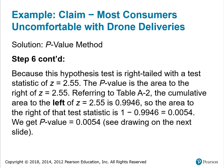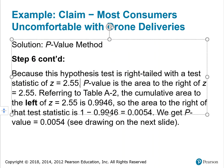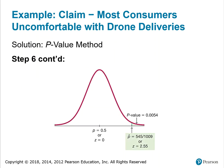Because this hypothesis test is right-tailed with a test statistic of Z equals 2.55, the P-value is the area to the right of Z equals 2.55. Referring to table A2, the cumulative area to the left of Z equals 2.55 is 0.9946. So the area to the right is 1 minus 0.9946, or 0.0054. We get a P-value of 0.0054. The pictorial representation shows a right-tailed test with Z equals 2.55 and the associated area of 0.0054.